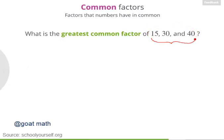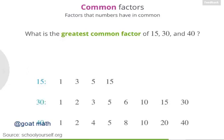And 60 and 80 have a whole bunch of common factors, and the GCF is 20. Finally, let's ask a trickier question. What's the greatest common factor of 15, 30, and 40? So now we have 3 numbers. You can figure this out the same way as before, by writing out the factors. So here are all the factors of 15, here are the factors of 30, and here are the factors of 40. So what's the GCF of 15, 30, and 40 — what's the largest number that appears on all 3 of these lists?